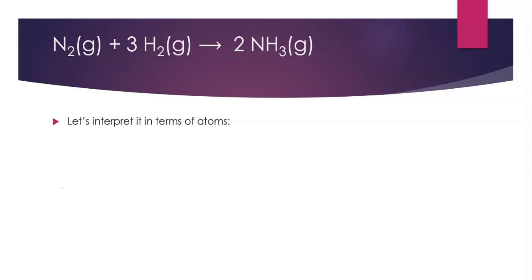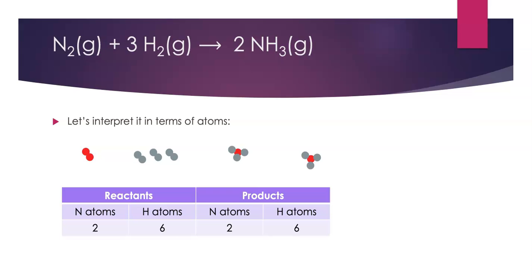We can think about this reaction in terms of the numbers and kinds of atoms involved. If I've got my nitrogen molecule, that's two atoms of nitrogen. I've got three hydrogen molecules, that's six atoms of hydrogen when I'm looking at my reactants. When I consider the products, I've got two NH3 molecules. Again, that's two nitrogen atoms and six hydrogen atoms. The number and kinds of atoms on each side of the equation are the same. That's what we mean by a balanced equation.